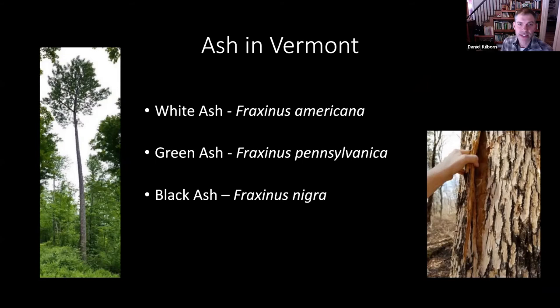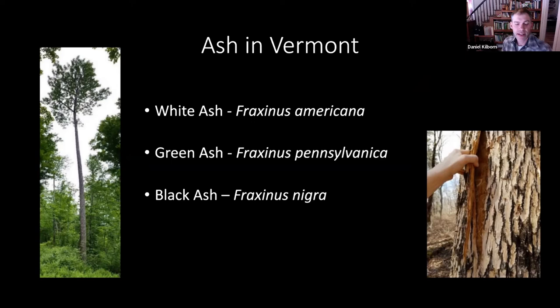Ash is an important component of our forests. We had questions about ash identification, but also several questions about emerald ash borer — what's the future of ash looking like in Vermont? What's the outlook with this invasive species? Should I cut my ash? The three species we have in Vermont are white, green, and black — often called brown. Let's get into some ID. For leaf-off ID, let's start with branching structure. Remembering the MADCap Horse mnemonic, ashes are opposite. The photo on the right shows those stout opposite branches. The leaf scars on ash are also large and easily seen, and you can see those showing up opposite on the twigs.